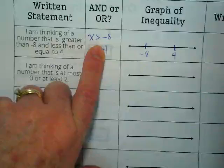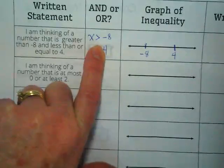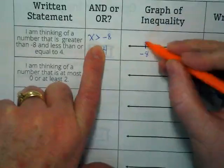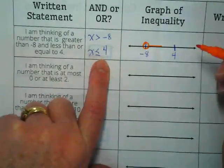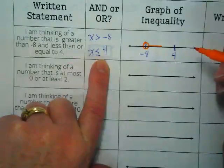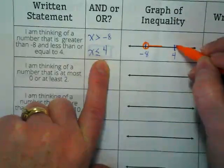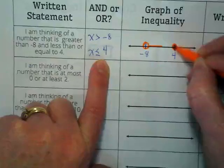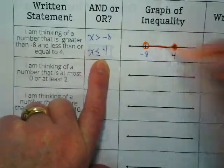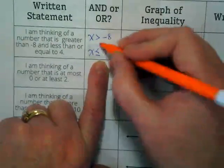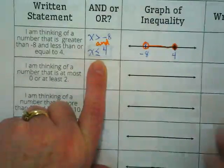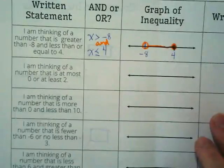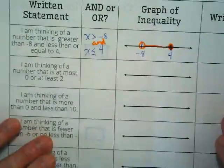Do I circle or fill in the circle for the negative 8? Circle. In which direction is its line going to go? Right. And x is less than or equal to 4, so what kind of circle? Filled in. And the line goes to the left. Is this an and or an or? And. Let's come back over here and put and in between this. And here is how we would write the inequality.